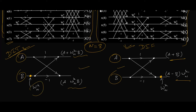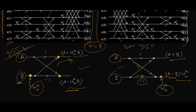The only difference is the position of the twiddle factor. For DIT, it first gets multiplied with sample B, then added with A, and subtracted from A. But in DIF, you first perform the subtraction A minus B, where A comes from one side and B from the other, and then the result multiplies with the twiddle factor. The first output is unaffected by the twiddle factor.